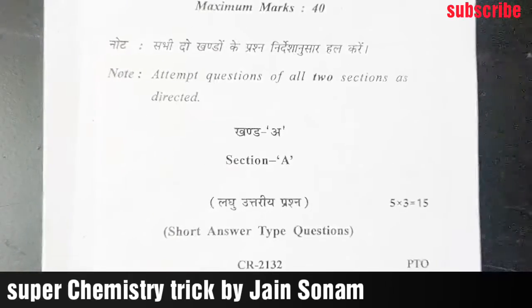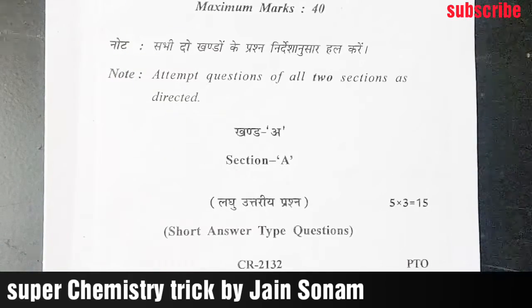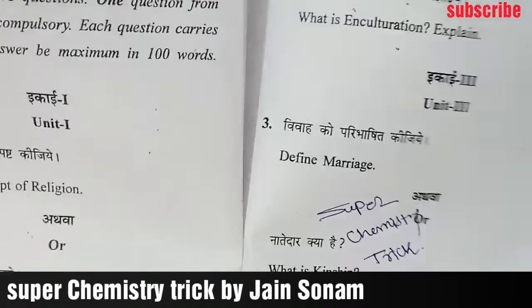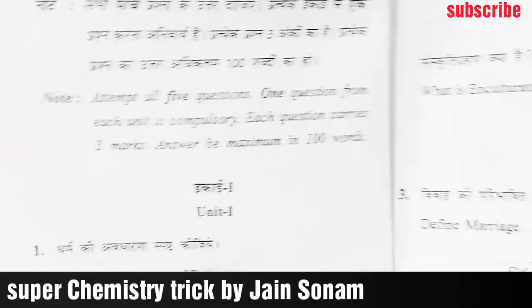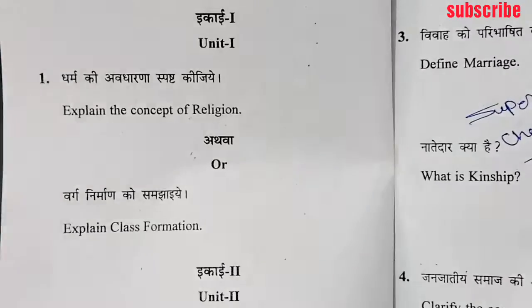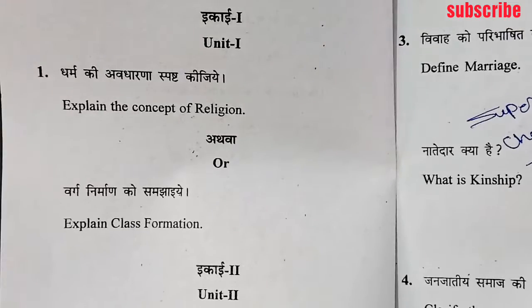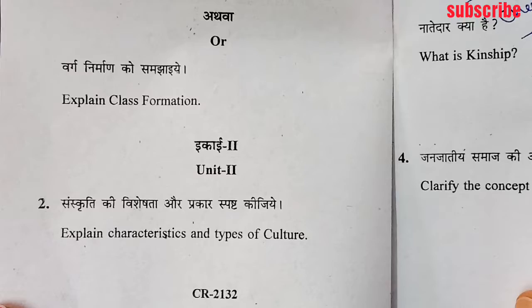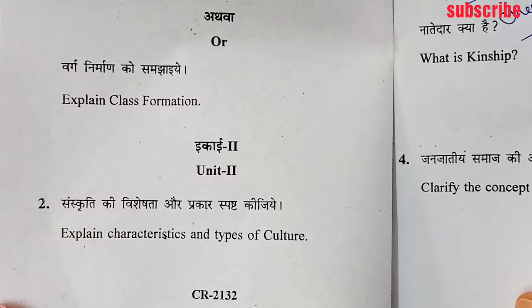There are two sections here. Let's talk about the first section — Section A, short answer questions, 3 marks each. The word limit is 100 words. In 100 words you can answer each question, which is shown on screen. If you want to take a screenshot of every paper, you should note down and keep them.